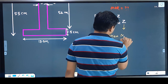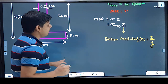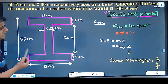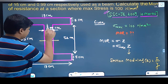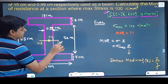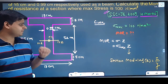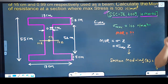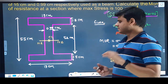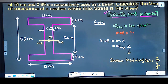Z is the section modulus, and its value is I/y. The section is symmetrical about the vertical axis, so the CG and neutral axis coincide in elastic analysis. I is the moment of inertia about the neutral axis, and since the section is symmetrical, y_max is the same distance on both sides. σ_max is 100.